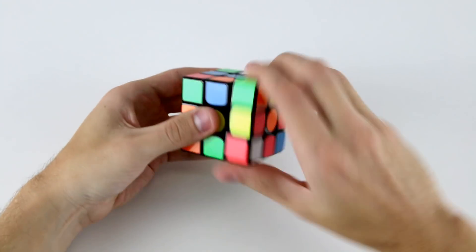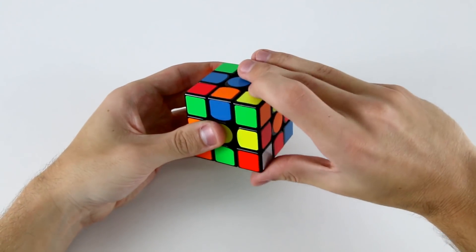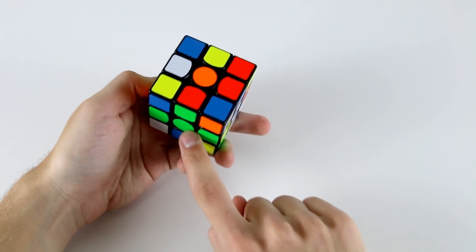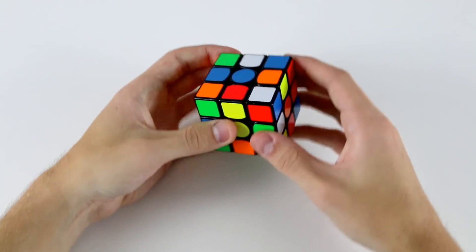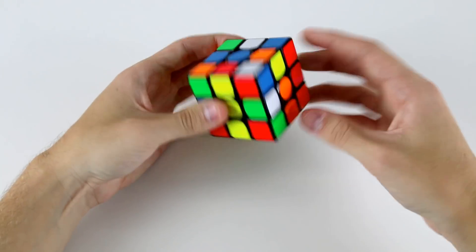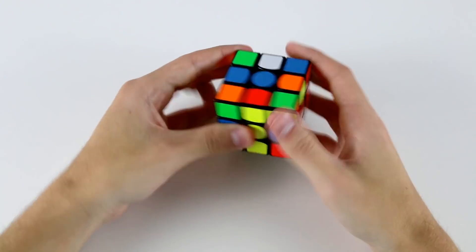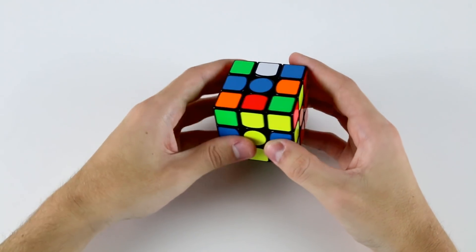I would do R2 prime like that to bring down this one. Then after I did the R2 prime, my thumb was in this position to do an F prime. Now this one's in the cross layer but it's not solved correctly relative to these two. So we need to do a D and then to finish off these two cross pieces we can do R prime D R. Like that. So that's how I would go ahead and solve that one.